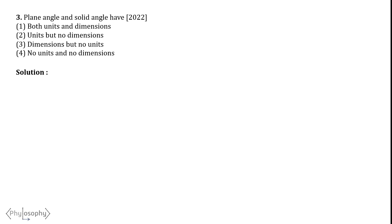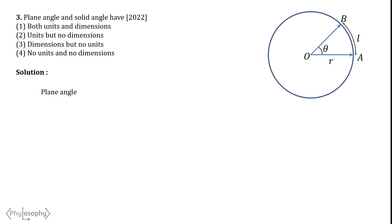Our next problem is: plane angle and solid angle have — both units and dimensions; units but no dimensions; dimensions but no units; or no units and no dimensions. This question came in NEET 2022. To solve this, we need to know what plane angles and solid angles are. Plane angle is the ratio of the subtended arc length on the circle to its radius, defined as arc over radius. Both arc and radius have the dimension of length, so it is L over L, giving a dimensional formula of M⁰L⁰T⁰. That is, plane angle has no dimensions, but its unit is radian.